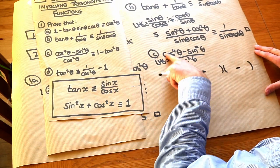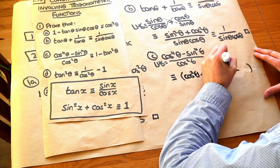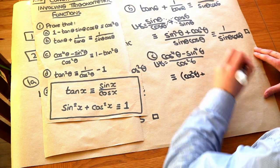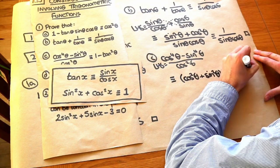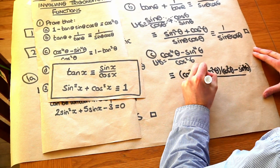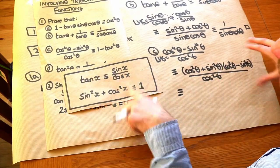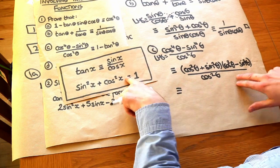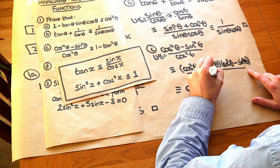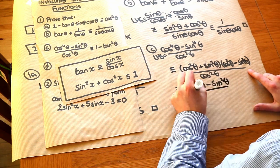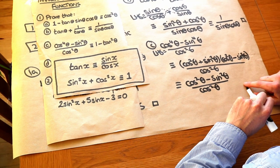The square root of cos to the 4 theta is cos squared theta, and the square root of sine to the 4 theta is sine squared theta. So we have (cos squared theta plus sine squared theta)(cos squared theta minus sine squared theta), all over cos squared theta. From our identity, cos squared theta plus sine squared theta equals 1, so this simplifies to 1 times (cos squared theta minus sine squared theta) over cos squared theta.